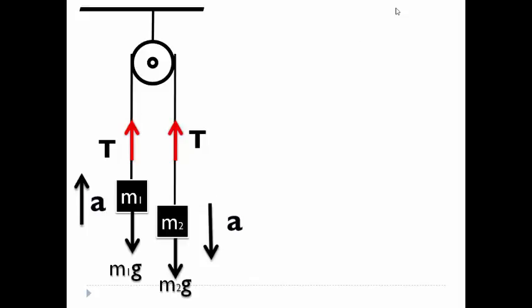Now we form the equations for masses M1 and M2. For mass M1, T is pulling upwards against the weight. Hence T minus M1 G will be equals to M1 into A.